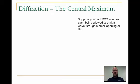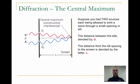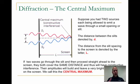Let's talk for just a moment about this central maximum. Suppose you have two sources of light, each being allowed to emit a wave through a small opening or slit. When the light passes through these slits, it's going to be in phase. When they come together, you can see this kind of forms an isosceles triangle here, meaning these two sides of this triangle are congruent. They travel the same distance which means they're going to come together and completely constructively interfere. That's where you get the really bright band. The distance between the slits we call d. The distance from the slit spacing to the screen is given by L. If two waves go through the slit and then proceed straight ahead to the screen, they both cover the same distance. It's completely constructive interference at the central maximum.